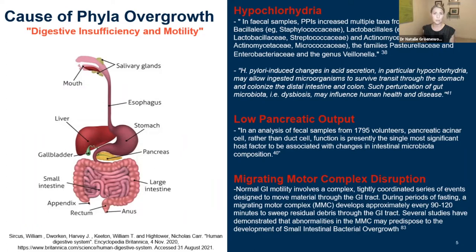For hypochlorhydria, there was a study with 708 participants that were PPI users, and they provided fecal samples that were analyzed. This showed an overgrowth in multiple orders of bacteria. Another research article suggested that H. pylori induced changes in acid secretion, in particular causing hypochlorhydria, which allowed ingested organisms to survive transit time through the stomach, and to start colonizing in the distal intestine and colon. For low pancreatic output, there was an analysis of fecal samples from almost 1800 volunteers. It showed that the pancreatic acinar cells, which produce the enzymes, were found to be the single most important factor associated with intestinal microbiota changes. For motility, several studies have demonstrated that abnormalities in the MMC or migrating motor complex may predispose to the development of small intestinal bacterial overgrowth.